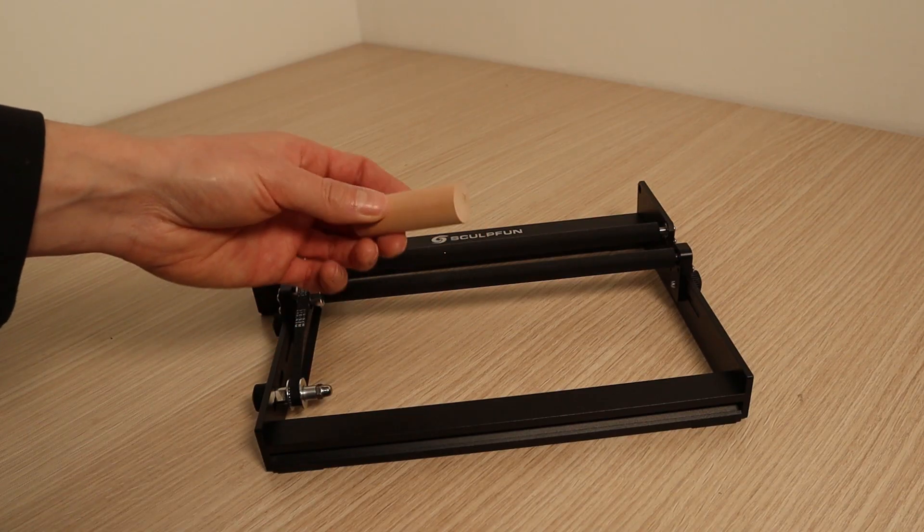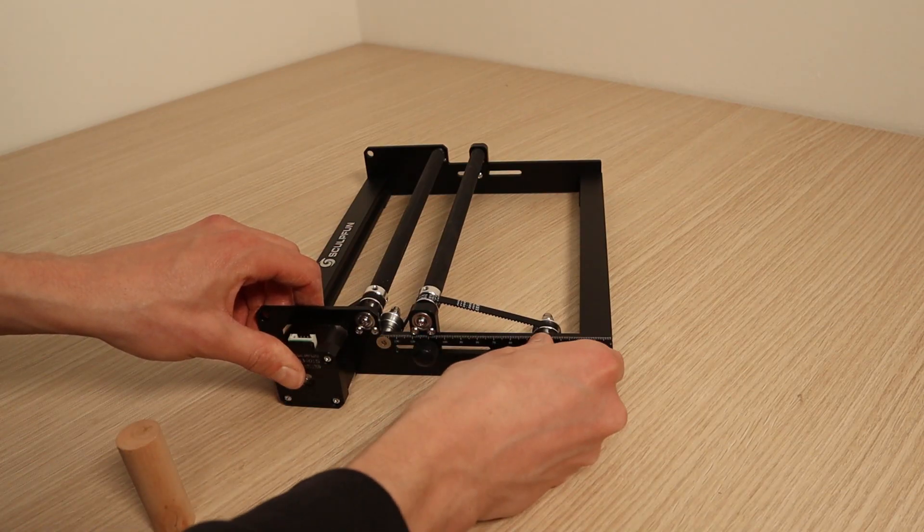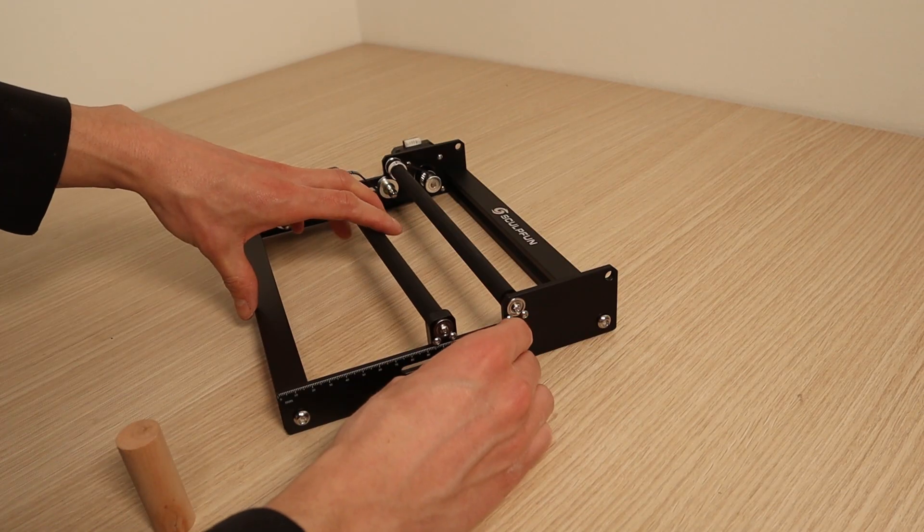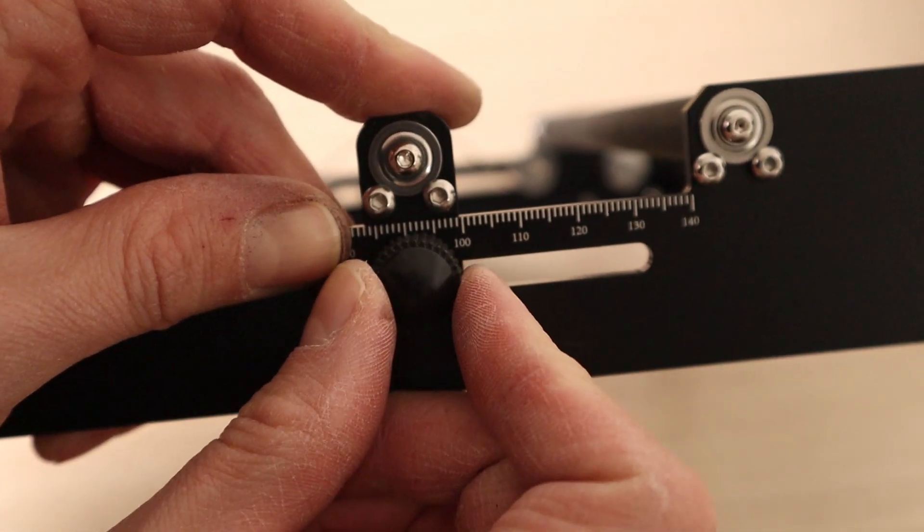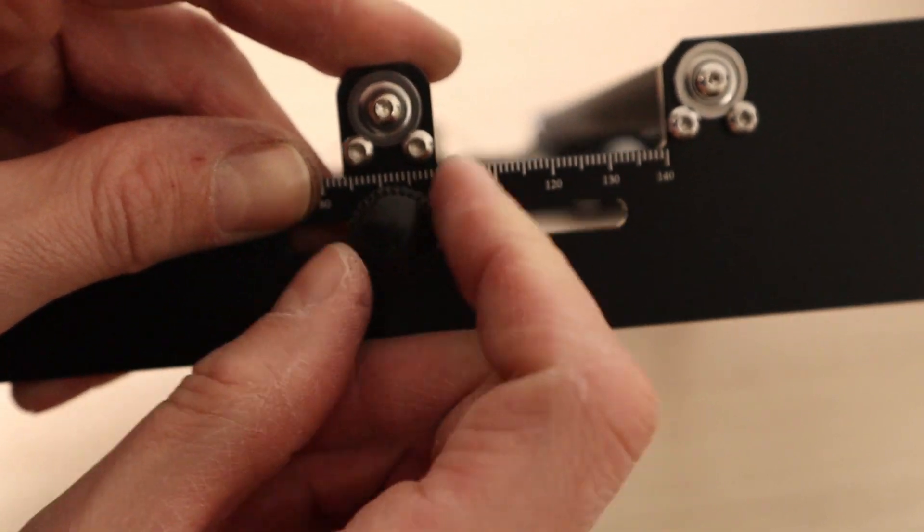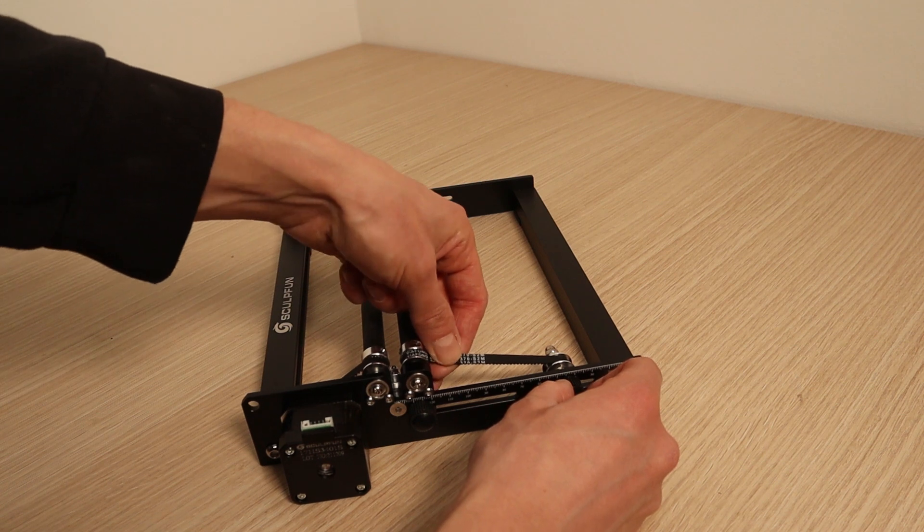Adjusting the rollers is easy. First, you need to release the roller and tensioner and slide the roller to the position you want. Then use the scale lines on both sides to make sure that the rollers are parallel. And lastly, tighten the belt tensioner.